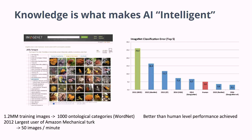They basically used crowdsourced labor — Amazon Mechanical Turk. In 2012, the largest customer of Amazon Mechanical Turk was this ImageNet labeling. The labelers labeled about 50 images per minute.